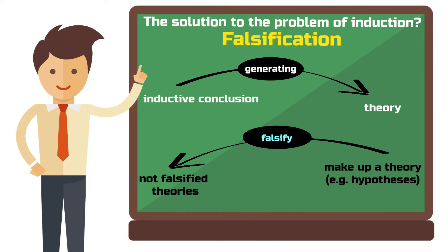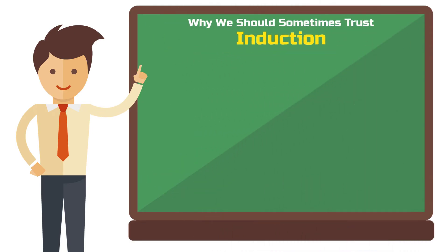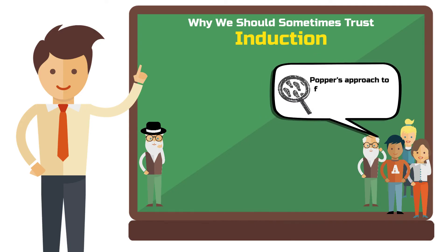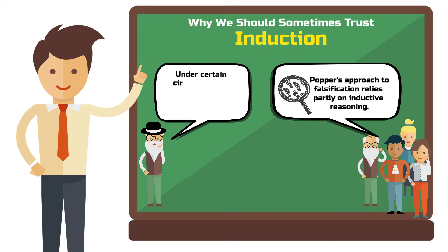Here we are no longer in the realm of induction, but in that of deductive reasoning — from general to specific. For the philosophy of science field, Popper's new approach was a milestone. However, it was not the hoped-for solution to the problem of induction. Many philosophers later showed that even Popper's approach to falsification relies partly on inductive reasoning. While Popper initially rejected all forms of induction as irrational early in his career, he softened his stance towards the end, acknowledging that under certain circumstances there might be a pragmatic justification for induction.